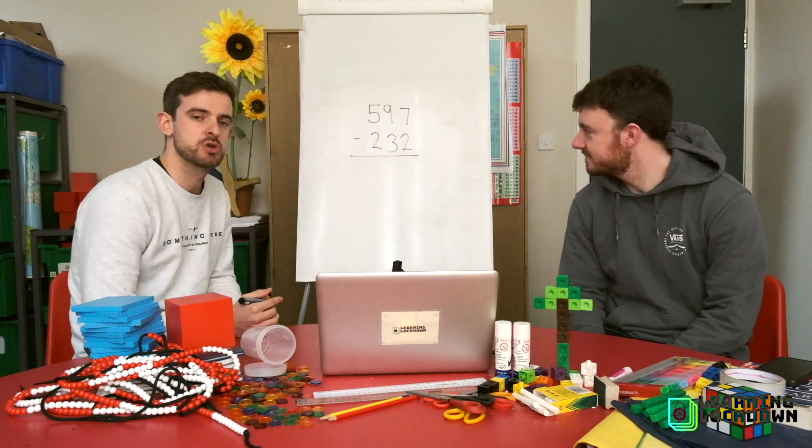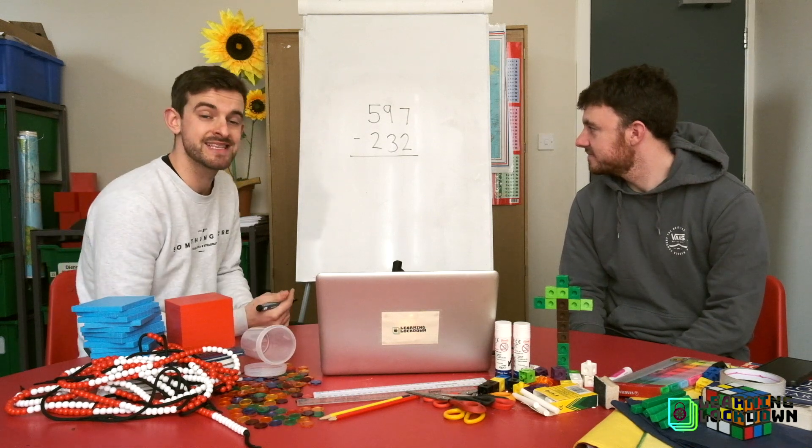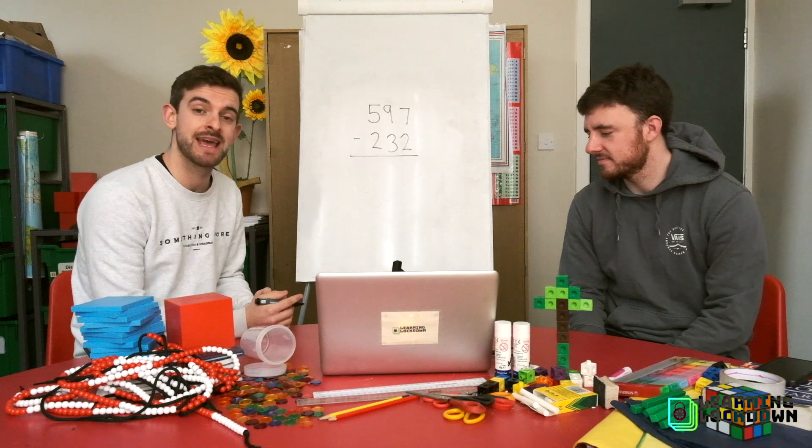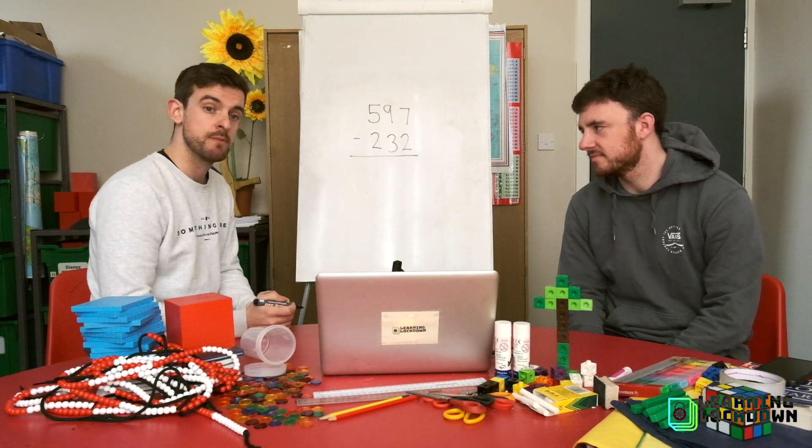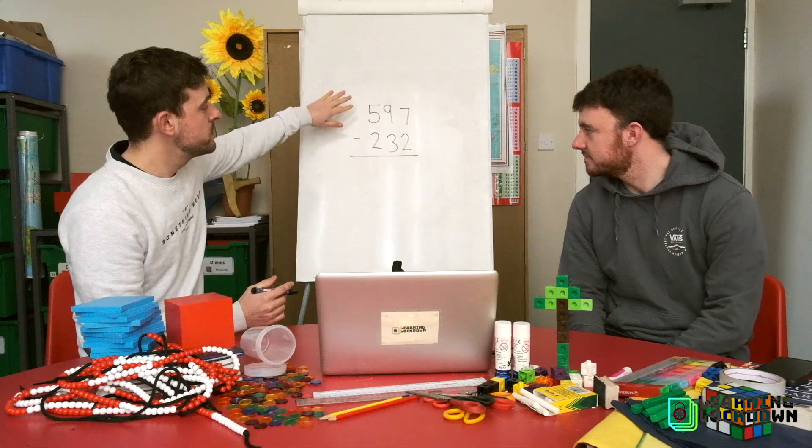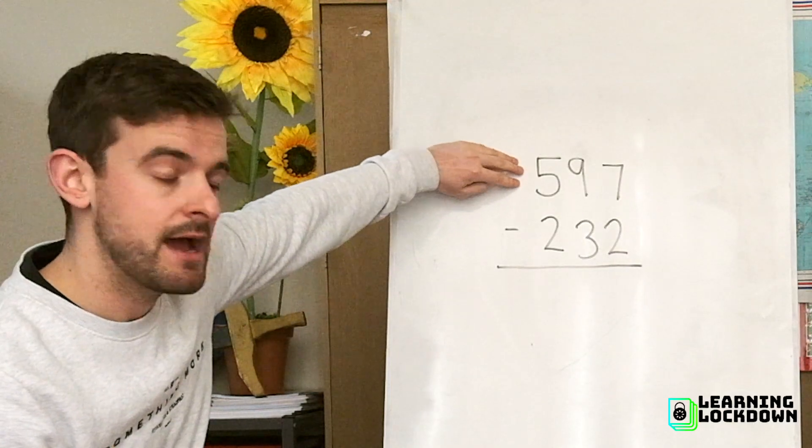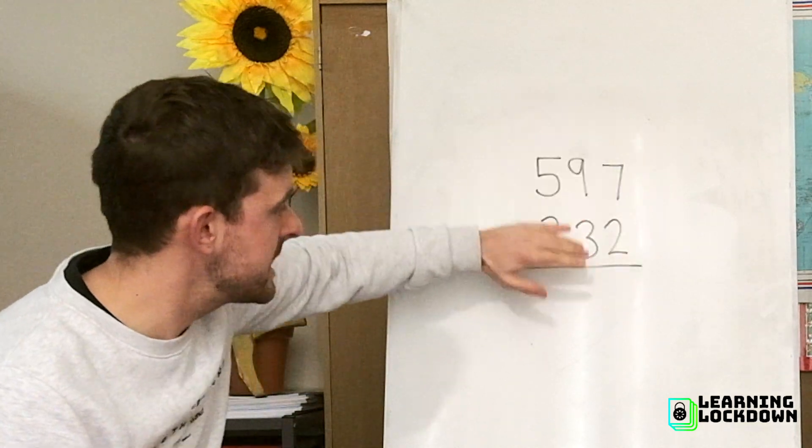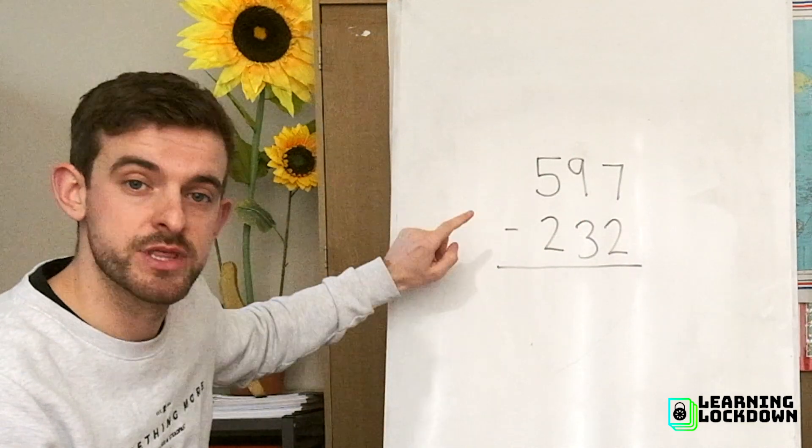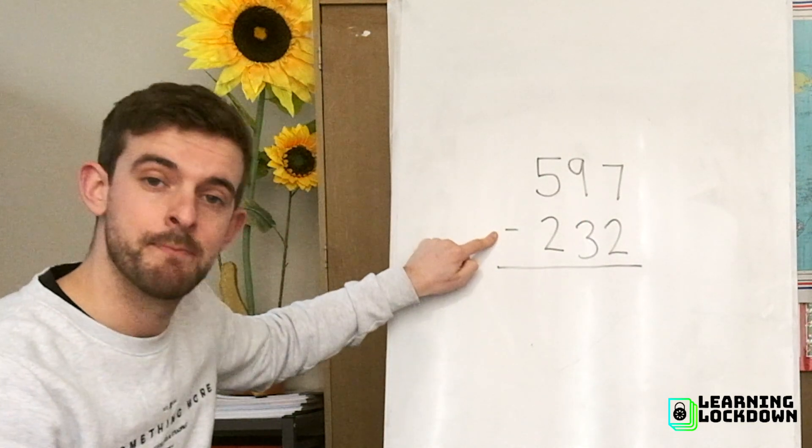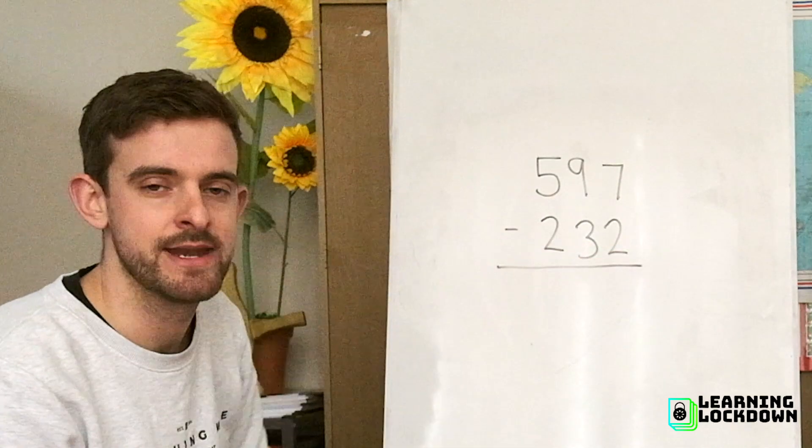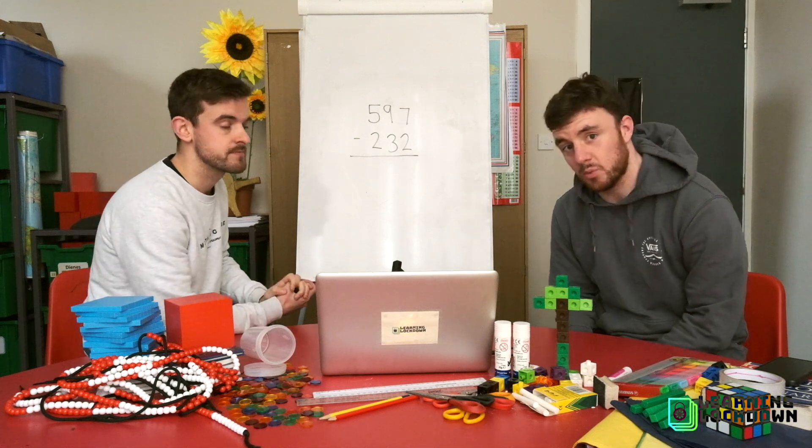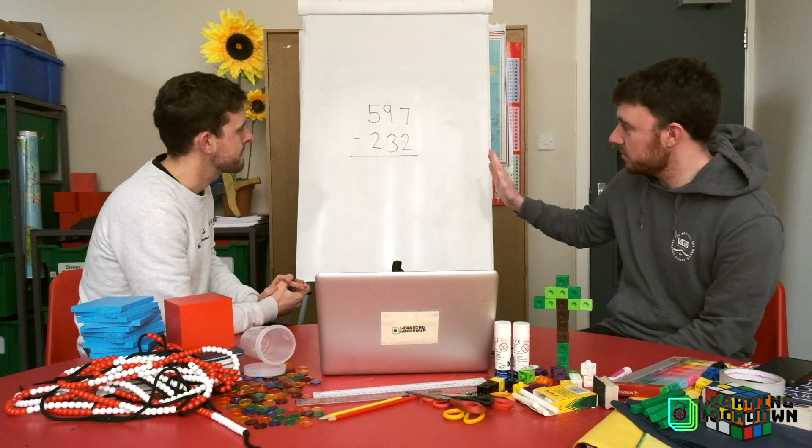Right. We've got a nice simple subtraction from here. And you can see what I've done already is I've laid it out using the column method. It's exactly the same way that we'd lay out our addition, column addition. But we just changed the operation symbol. So we've got 597. And we're taking away 232. I make sure my 1s, 10s and 100s are all lined up. And I put the operation symbol, subtraction minus, right next to it here. And then draw a line underneath. And as with the addition. Where do we start Mr. S? We start in the 1s column. And we go from there and work our way across.